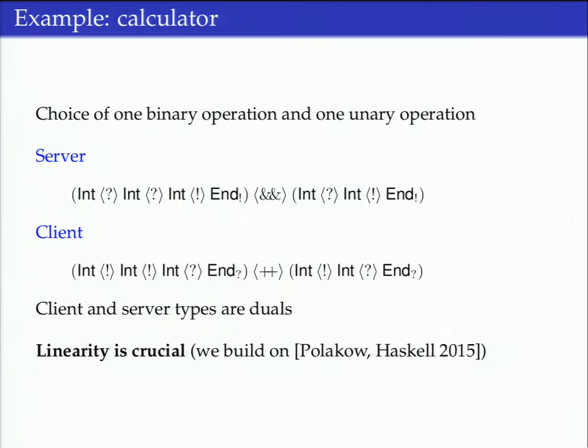As Garrett showed in his ICFP talk, linearity is absolutely crucial here. That's why we're building on Jeff's work. Roughly, the reason for that is if we want to statically track where we are in some communication, it's not going to work if you have two copies of that endpoint because how will they know how the type has evolved.